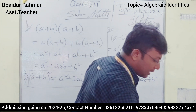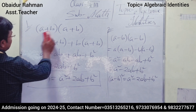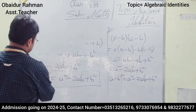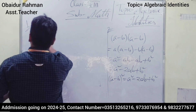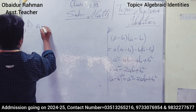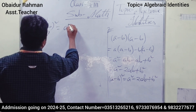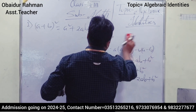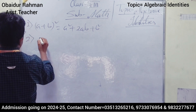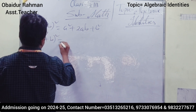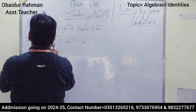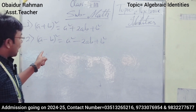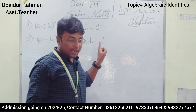Let me erase and restate both identities clearly. Identity number one: (a + b)² = a² + 2ab + b². Identity number two: (a − b)² = a² − 2ab + b².